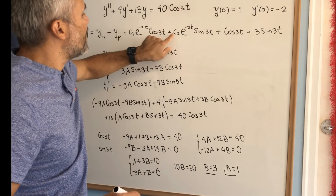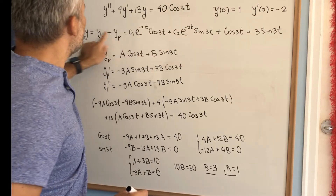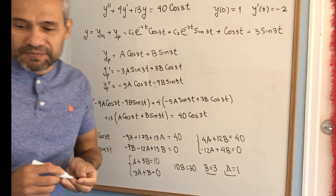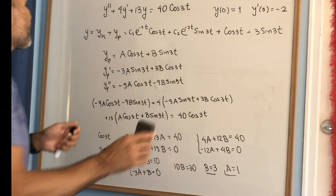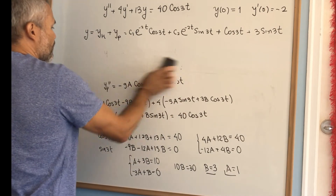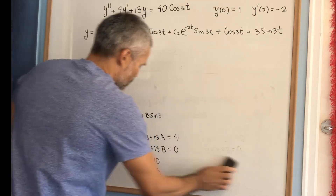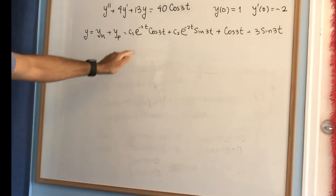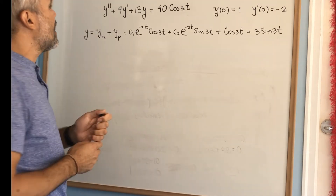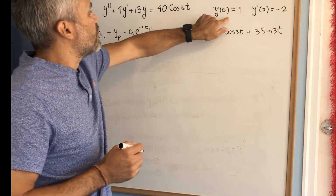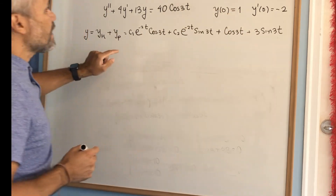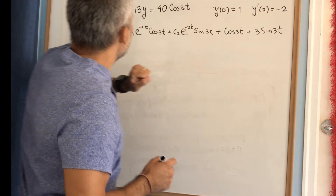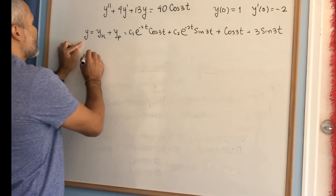Now we find c1 and c2 so that the solution satisfies the initial conditions. We want to find two numbers c1 and c2, so we need two equations. We can use y(0) directly, but to use the second condition we first need to take the derivative of the general solution.